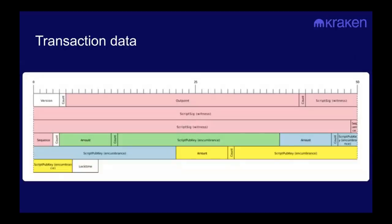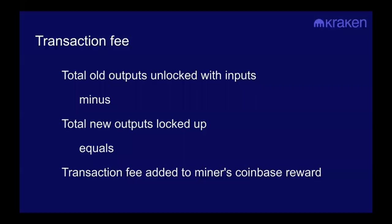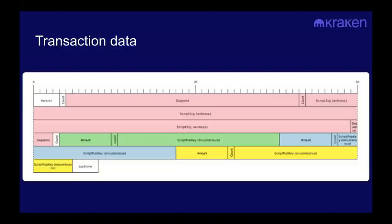This is a visual representation of the data inside a transaction. The more outputs and inputs you have, the more data is used up by the transaction. The Bitcoin system's main bottleneck is data, and most of the data in Bitcoin is going to be used up by inputs and outputs.